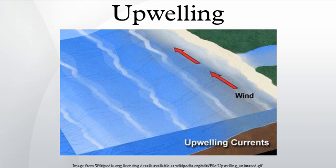There are five major coastal currents associated with upwelling areas: the Canary Current, the Benguela Current, the California Current, the Humboldt Current, and the Somali Current. All of these currents support major fisheries. Upwelling also occurs in southeastern Brazil, more precisely in Arraial do Cabo.